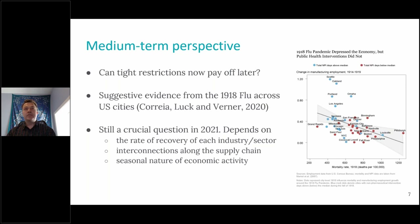Can tight restrictions imposed now pay off later? Many of you may have seen back in earlier in the pandemic there was a discussion about this. One of the most well-known articles discussed suggestive evidence from the 1918 flu pandemic across US cities, arguing that cities that locked down more restrictively early on and consequently had lower mortality rates benefited from this later in terms of growth. There's been some debate about this, but it's still a crucial question today. It depends on the rate of recovery of different sectors, the interconnections along the supply chain, and the seasonal nature of economic activity.